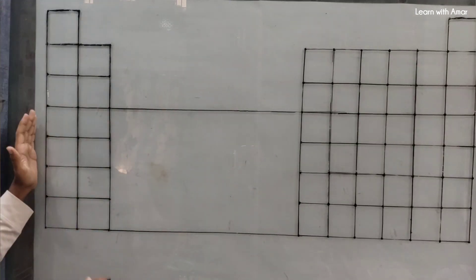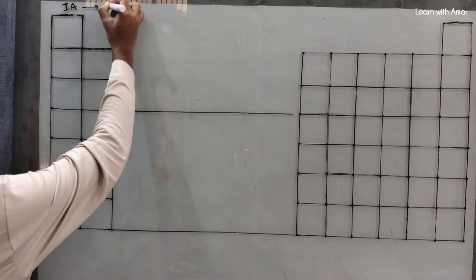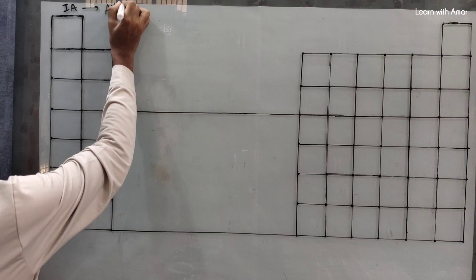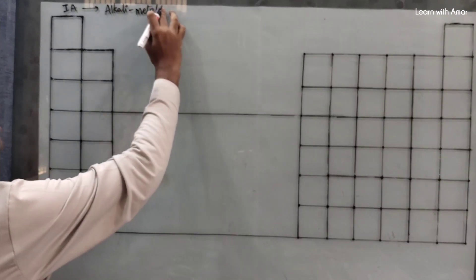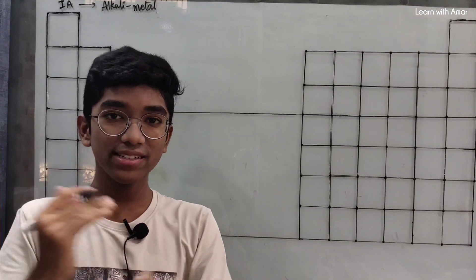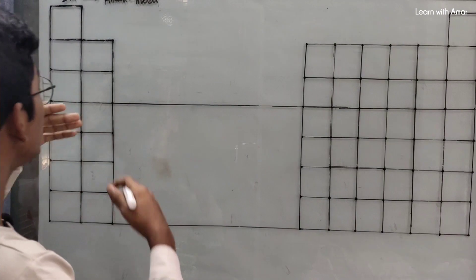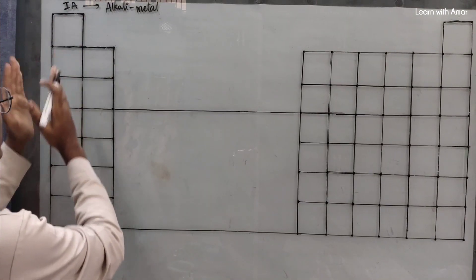The first group is 1A, which is also known as the alkali metal family. An interesting thing is that in each group the elements represent each other in their properties — that means all elements in a group have similar properties, which is why we also call them families. This is the alkali metal family, the first group, 1A.